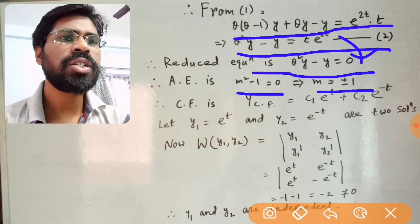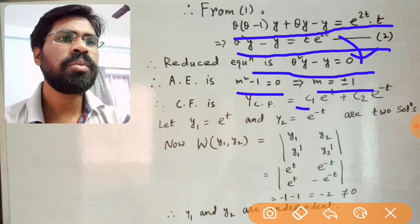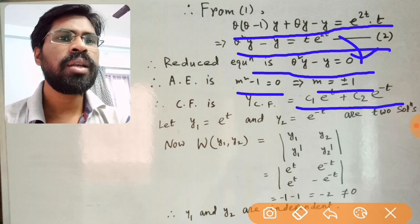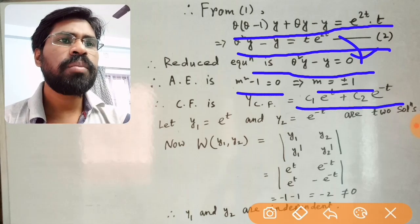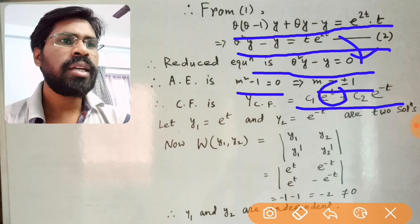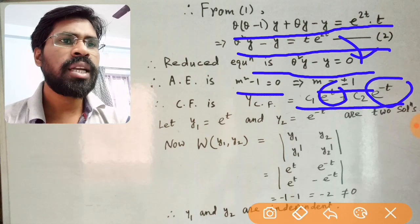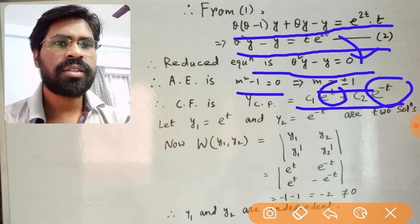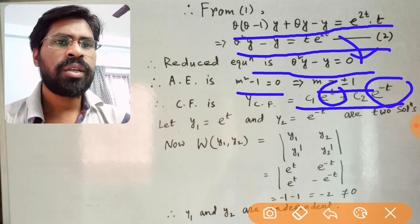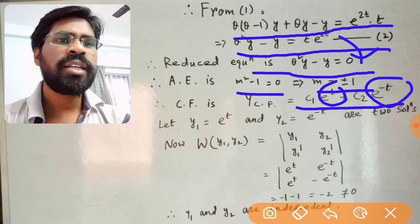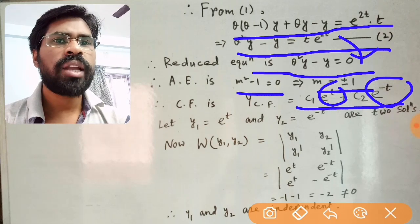Therefore the complementary function is y_cf = c₁e^t + c₂e^{-t}. Let y₁ = e^t and y₂ = e^{-t} be the two solutions. Now we check the independence of y₁ and y₂ by calculating the Wronskian of y₁ and y₂.